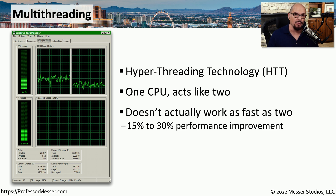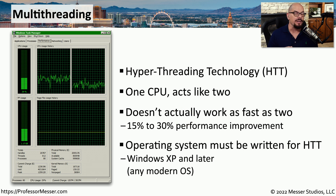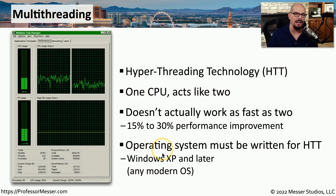In reality, we're not getting twice the amount of work from one single device. Instead, it simply increases the throughput of the processes going through the CPU by somewhere around 15% to 30%. Not only do you need a CPU that supports hyper-threading, but your operating system also has to support it as well. Today, any modern operating system supports hyper-threading, and if you bring up some CPU monitoring, you'll very quickly see the results of this hyper-threading technology.